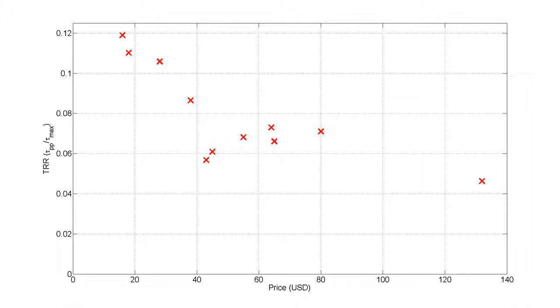We tested both methods on 11 motors. This is the same graph as before with price versus torque ripple ratio, but now with the anti-cog motors. You can see what was once an inverse relationship is now roughly constant.